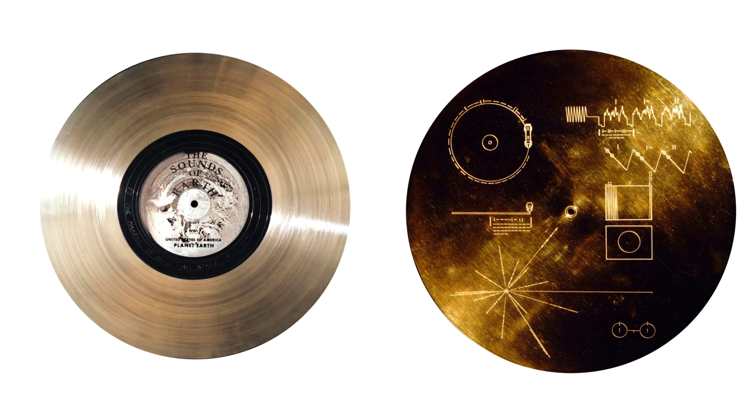On the left, you see here the golden record. The sounds of Earth, a various collection of sounds, are encoded in analog form on this record. Various pictures depicting scenes of Earth are also depicted in analog form on the record.